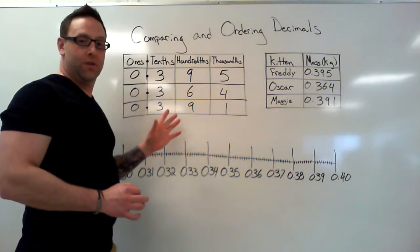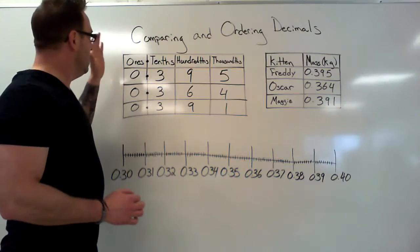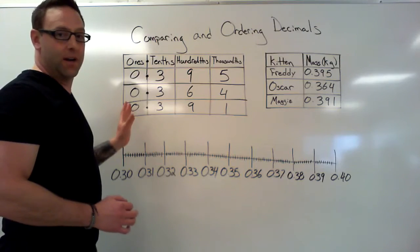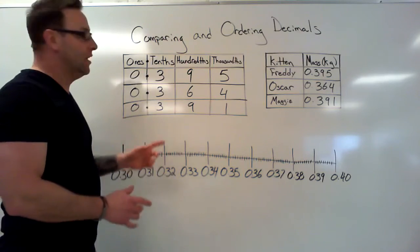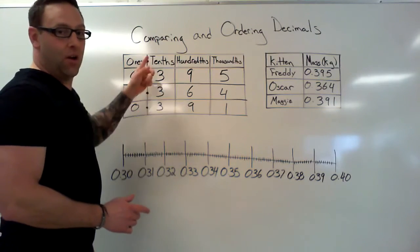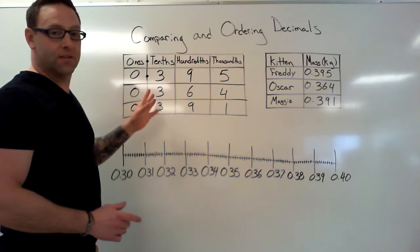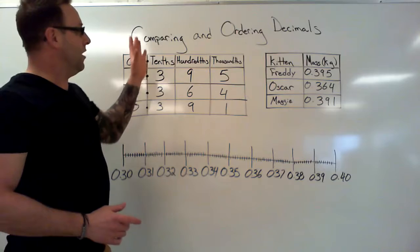What we can see here with our place value chart is that in the ones place, each of these numbers has a value of zero, so we know they're going to be fairly close. In the tenths place, all three of these numbers have a value of three. You've got three tenths for each of these numbers.